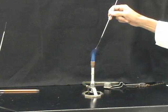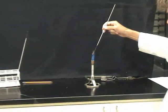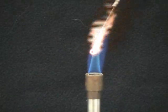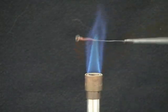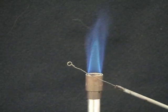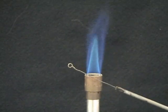To sterilize the loop, it is held in the flame, just above the inner cone. The loop should turn red. The loop is then removed from the flame and allowed to cool for about 30 seconds. It is important to be patient and allow the loop to completely cool.